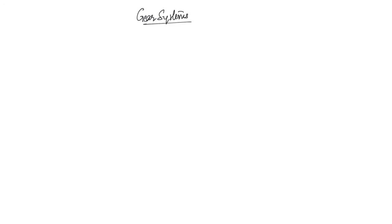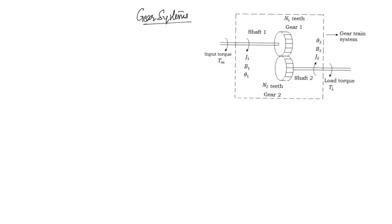Next we will go ahead with the modelling of gear systems. In this diagram you have gear 1 which is running gear 2. The motor is running gear 1, and that torque is given by Tm. Gear 1 is running gear 2, which is in turn running the load. The load torque that gear 2 supplies is given by Tl, and the number of teeth of the first gear is N1 and the second gear is N2.